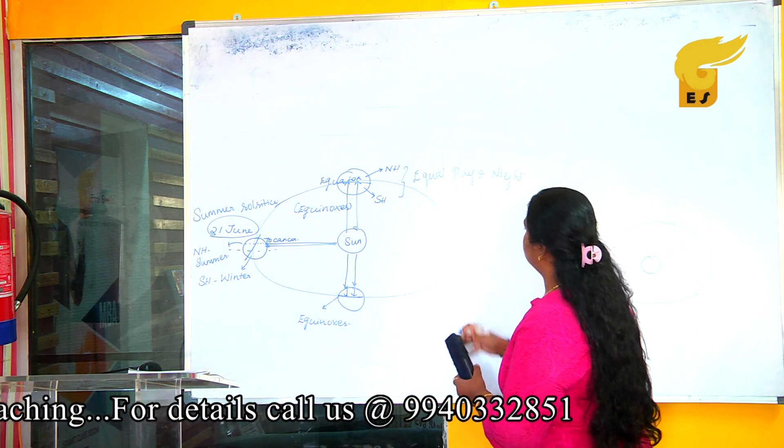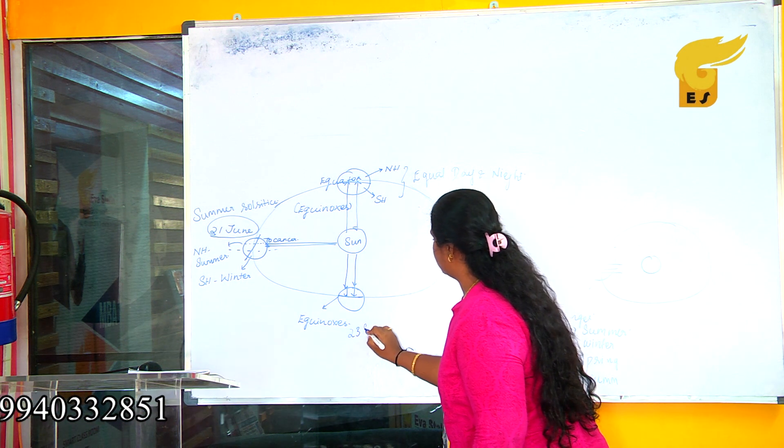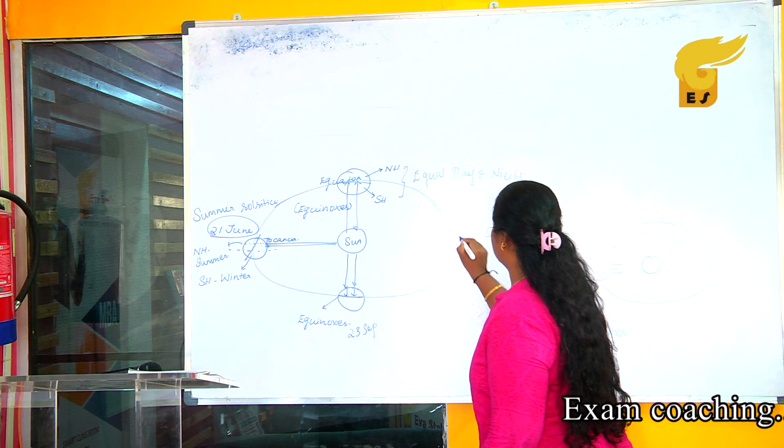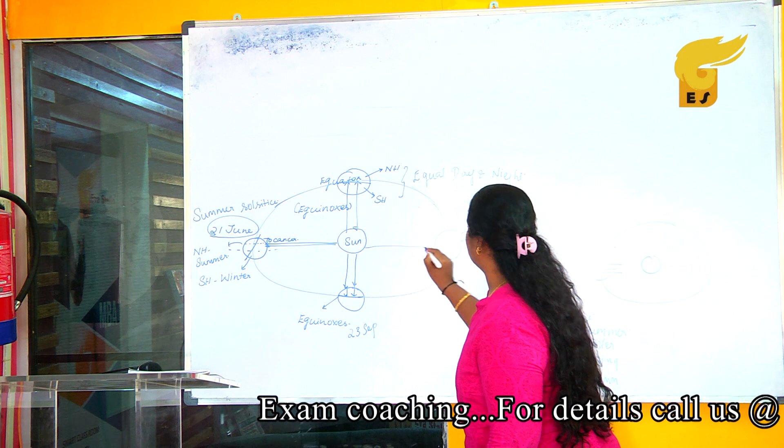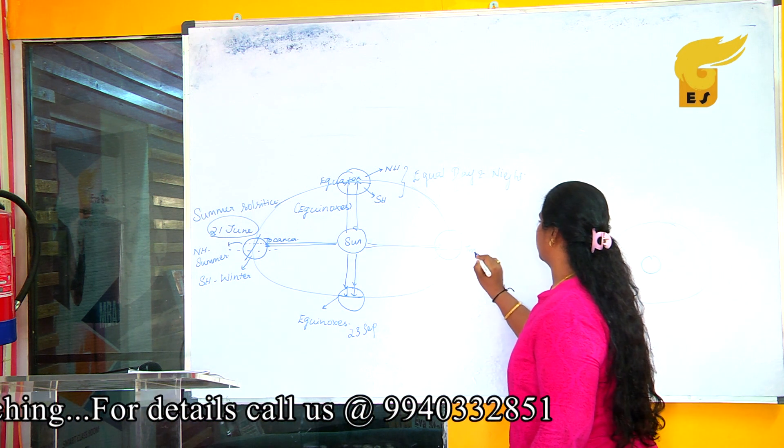When Earth reaches, and this happens on 23rd September, and when Earth reaches this position, the Sun rays will directly fall on Tropic of Capricorn.